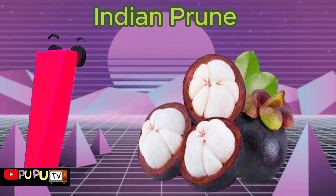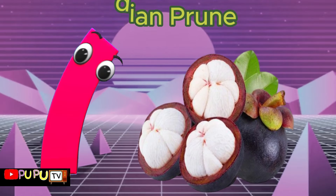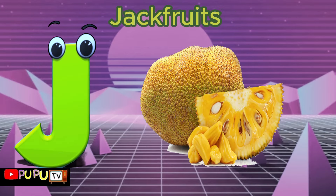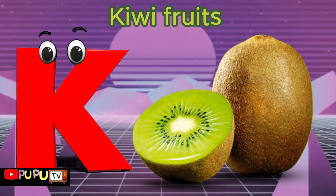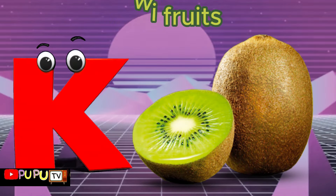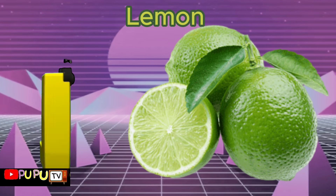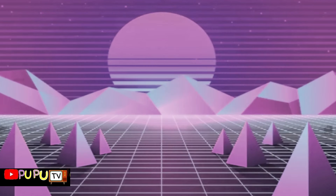I is for Indian Prune. I-I-Indian Prune. J is for Jackfruit. Jackfruit. K is for Kiwifruit. Kiwifruit. L is for Lemon. Lemon.